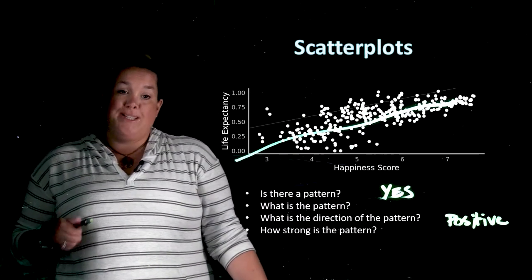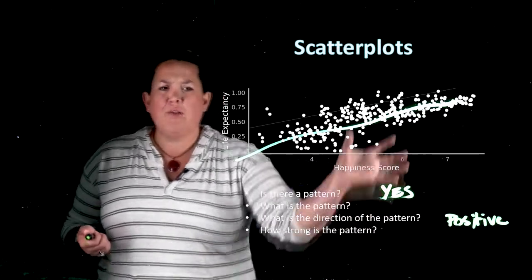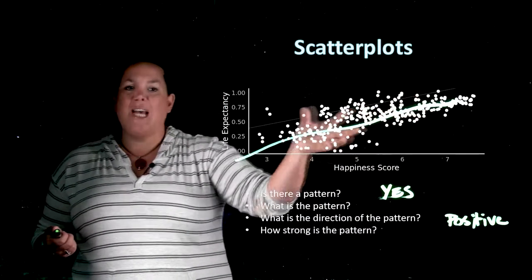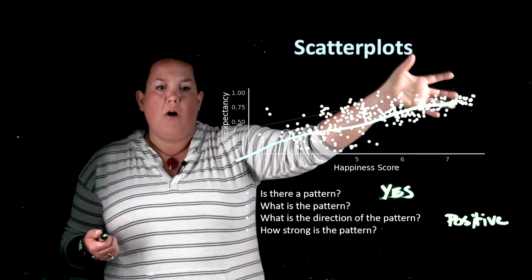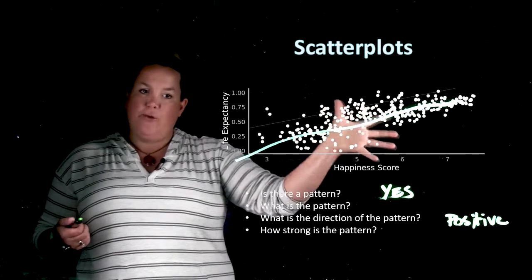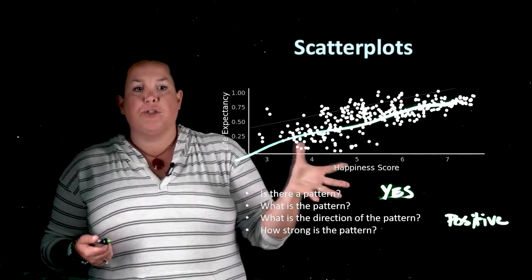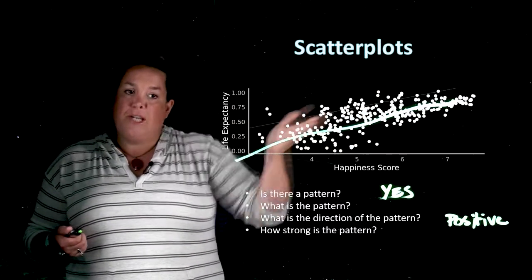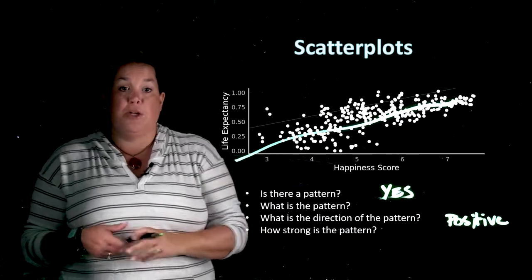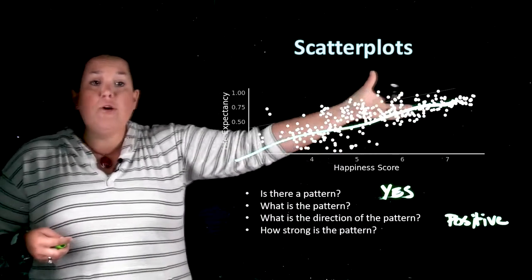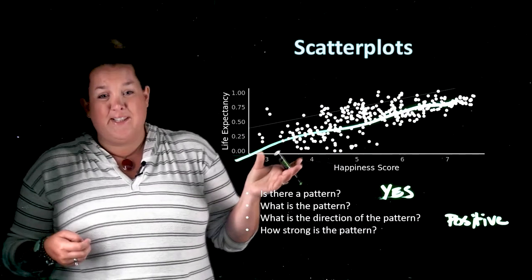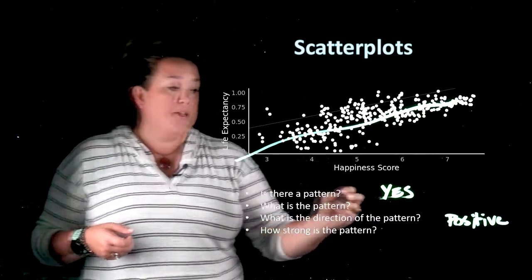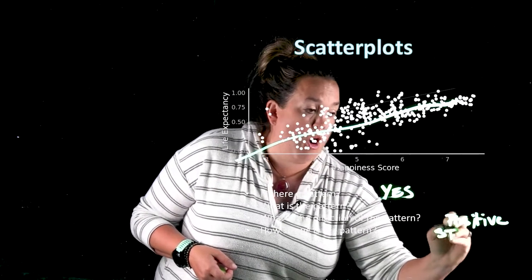The next question is how strong is the pattern? So really you want to see how tight are these dots together. Are they really tight or are they really loose? The looser they are, the weaker the relationship is. The tighter the pattern around that line that we're seeing here, the stronger the relationship. Now here I would say that this scatterplot has a fairly tight relationship, so I would say that this is a strong relationship.